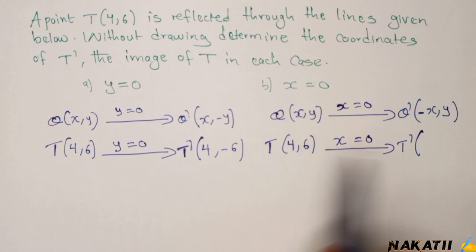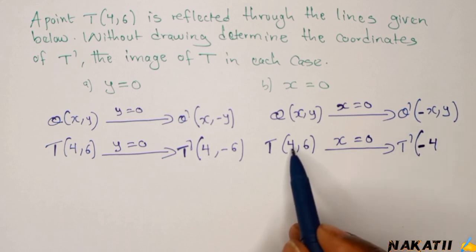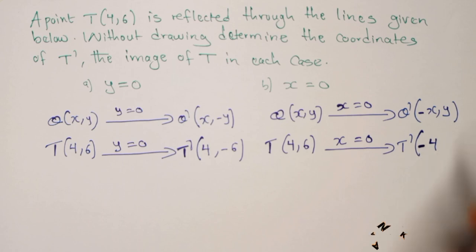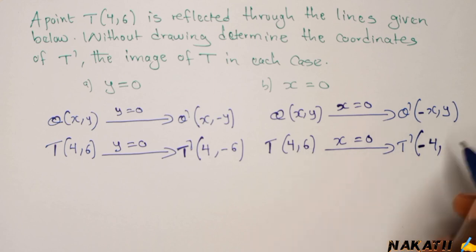So you change the sign of the x-coordinate, so it becomes negative. So it becomes -4. Here it is positive, now it becomes negative. Then comma, then you retain the y-coordinate the way it is.